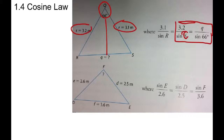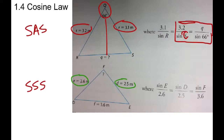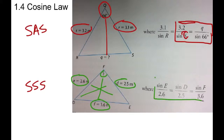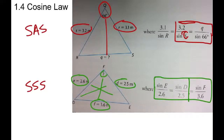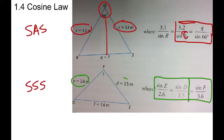The second case is similar — when you get a triangle that is side-side-side. In this case, you can see we have a triangle that has all three sides given to us but no angles, and it's asking us to find angle f. If we use the sine law, you'd have angle e over 2.6, angle d over 2.5, and angle f over 3.6. No matter which two pieces we look at, we're going to have two unknown angles. So side-angle-side and side-side-side are the two cases where the sine law isn't going to work.